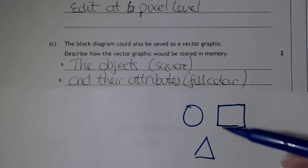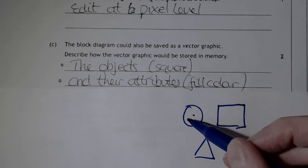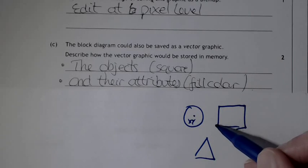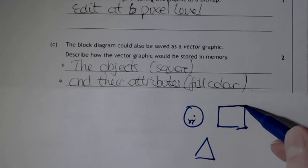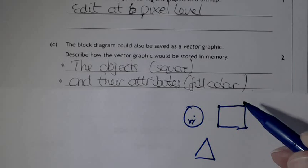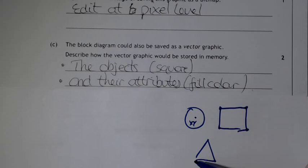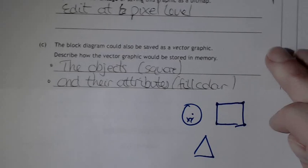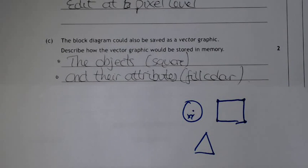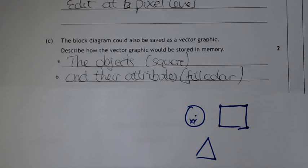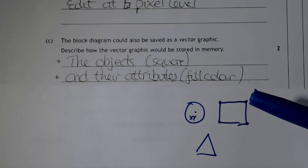And their attributes, which just really means that might be the x-y coordinates of the corners or the center. It might then be the fill color, the line color. So it's saved mathematically - a description of how you recreate this object on your page. And that's all it's saved as.